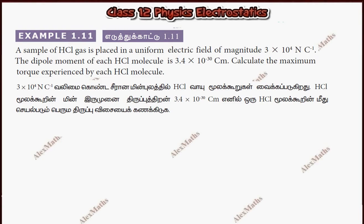Hi students, this is Alex here. Example 1.11: A sample of HCl gas is placed in a uniform electric field of magnitude 3 × 10⁴ newton per coulomb. The dipole moment of each HCl molecule is 3.4 × 10⁻³⁰ coulomb meter.